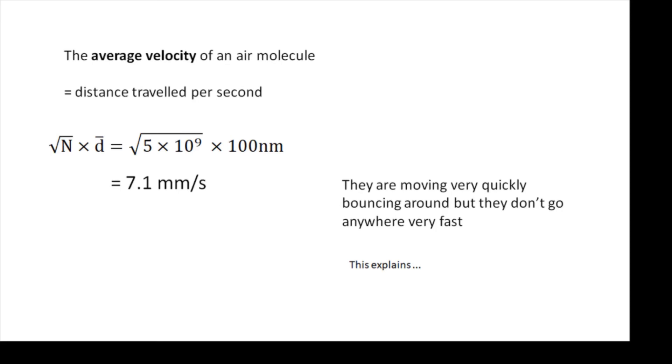And we get 7.1 millimeters per second. So the average velocity of your air molecules in terms of getting from A to B isn't very much—it's about 7.1 millimeters per second. They are moving very quickly, but they're bouncing around so much, so many collisions every second, they don't go anywhere very fast.